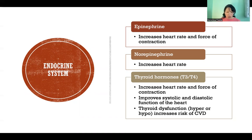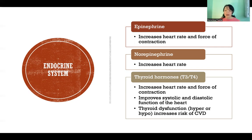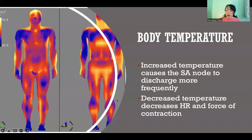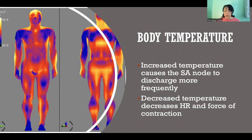When we have thyroid dysfunction, whether that be hyper or hypo — too much or not enough — both increase the risk of cardiovascular disease and a variety of different cardiovascular complications and problems in either direction. Hyper or hypo causes different problems because of the effects those hormones have on the cardiovascular system. Finally, body temperature also influences heart rate. Higher body temperature causes the SA node to discharge more frequently, while lower body temperature causes it to slow down and discharge less frequently.